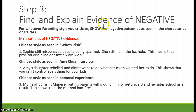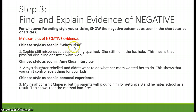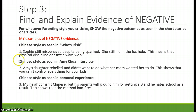Then you're going to find and explain evidence of the negative. We're going back to criticizing the first style. For whatever parenting style you wanted to criticize, you're going to show — not tell — show the negative outcomes as seen in the short story. Here are some examples of negative evidence. Chinese style as seen in 'Who's Irish': Sophie still misbehaved despite being spanked — she still hid in the foxhole. That's the evidence, and then I explain it: this means that physical discipline doesn't always work. Remember, I need three pieces of evidence.